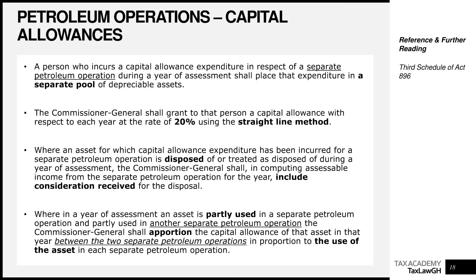Where would you include it? In computing your assessable income for the separate petroleum operations, you add the consideration received. If your petroleum operation has disposed of any asset that was previously in your pool, the Commissioner General, when computing your assessable income, shall add the consideration received for the disposal. This means the consideration received becomes an income line in arriving at your assessable income from petroleum operations for the year.